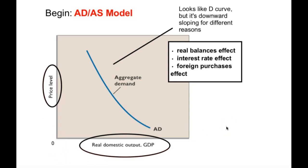If you look at this graph, it looks like a typical demand curve — like the demand curve for coffee or corn — but it's sloped downward for very different reasons. It wouldn't make sense with aggregate demand, which is demand for all goods and services from all sectors of the economy, to say that people have diminishing utility for all goods. If you buy a slice of pizza, that doesn't diminish your desire to buy shoes, for example. It also doesn't make sense to talk about a substitution effect, because what are you going to substitute for all goods? So we have to understand this curve in a slightly different way.